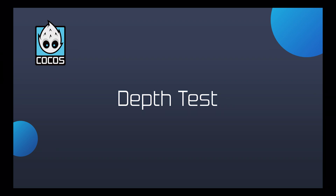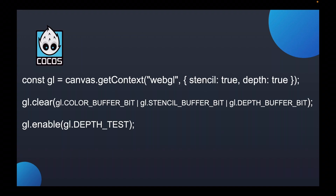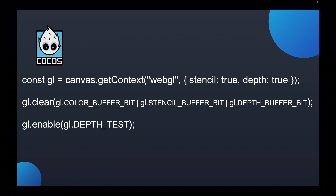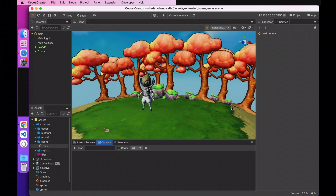The depth buffer also has an important function, depthFunc, which takes one argument to set the depth comparison function. The parameters are the same as those used in the template buffer comparison function, and the default is less. The depth test is also disabled by default, so you'll need to enable it manually. When the depth test passes, the Z value of the current fragment is stored in the depth buffer. The Z value of the current clip is between 0 and 1, based on the projection matrix and standard device coordinates.